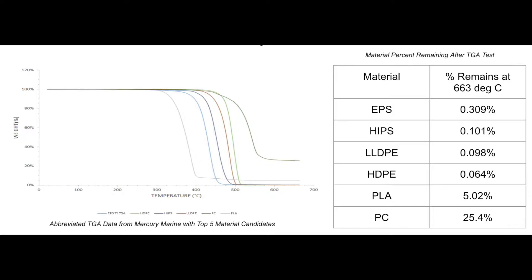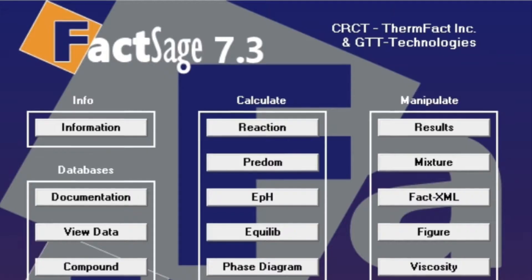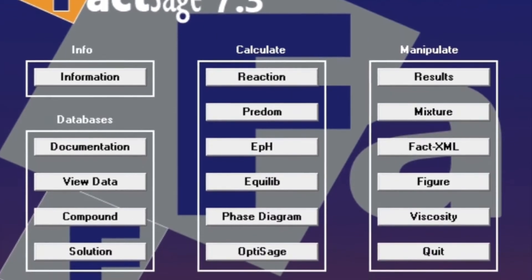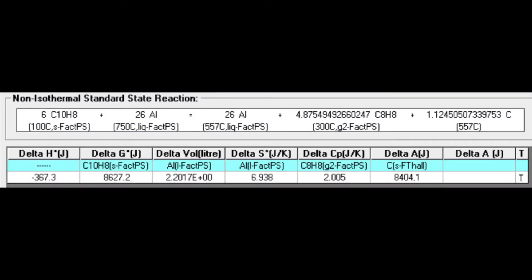The first semester of our project consisted of selecting viable filaments to use for 3D printing. Mercury provided our team with thermogravimetric analysis data, which we used as a tool to decide which filaments perform similarly to polystyrene. In addition to the initial data from Mercury, our team used a program called FACTSAGE to run chemical calculations to further support our material selection.